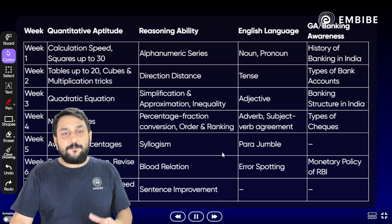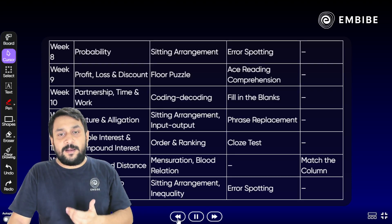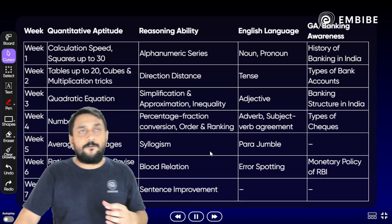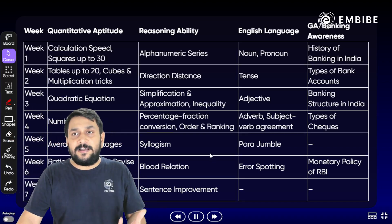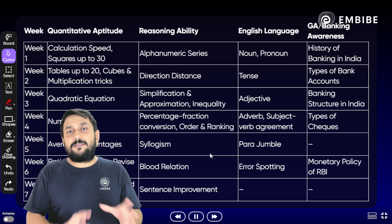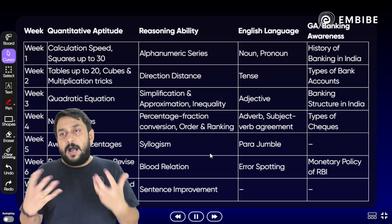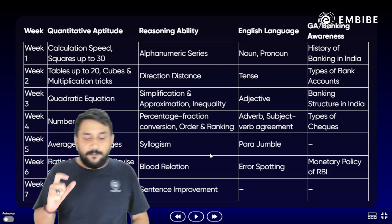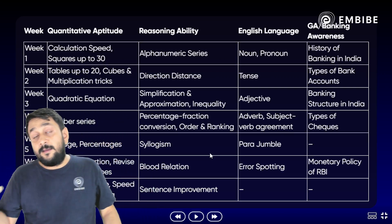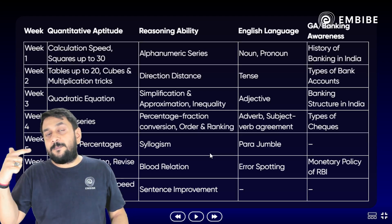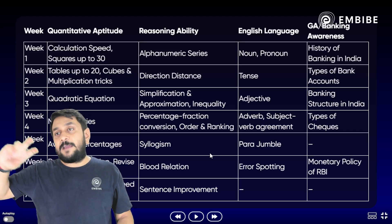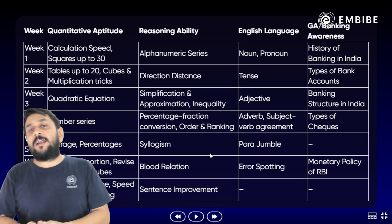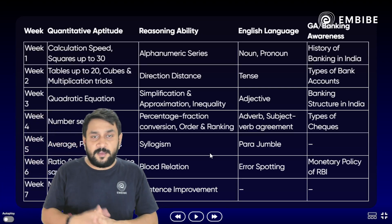सबसे पहले बात करते हैं — जो हमने पूरा का पूरा study plan है, ये 14 weeks में divide किया है, मतलब लगभग 14×7 = 98 days, लगभग 90-100 दिन। Current situation की बात करें तो RRB का exam एक महीने में है, लेकिन IBPS Clerk, IBPS PO, SBI Clerk, SBI PO के लिए इस study plan को definitely follow कर सकते हैं।